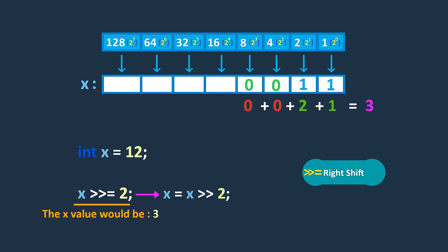In summary, assignment operators provide a concise way of performing operations and updating the value of variables. They can be particularly useful when we want to modify a variable based on its current value.